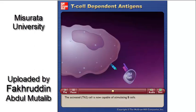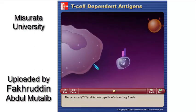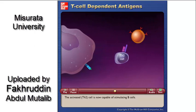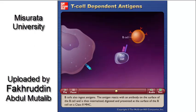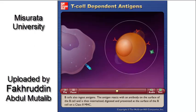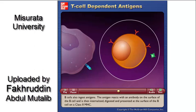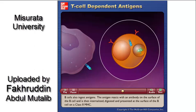The activated Th2 cell is now capable of stimulating B cells. B cells also ingest antigens. The antigen reacts with an antibody on the surface of the B cell, is then internalized, digested, and presented at the surface of the B cell on a class II MHC.